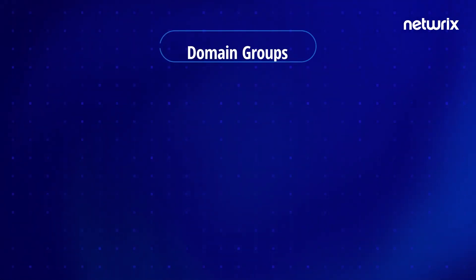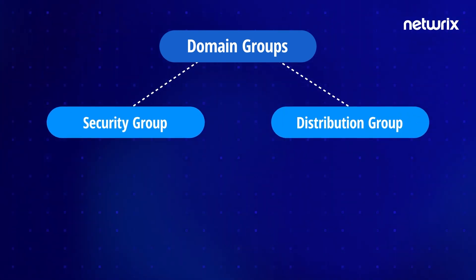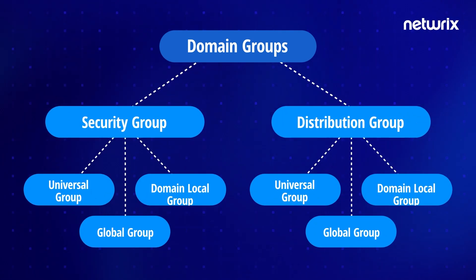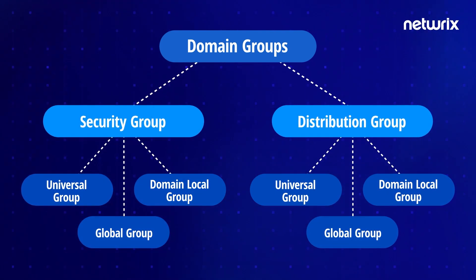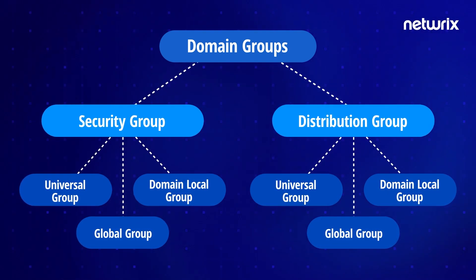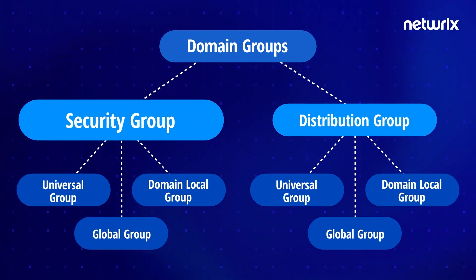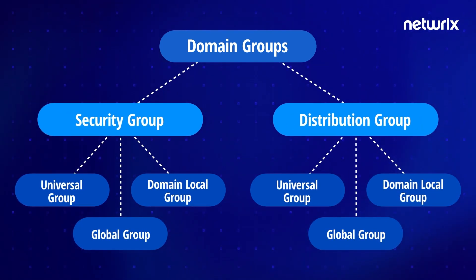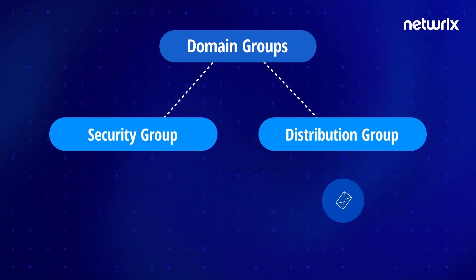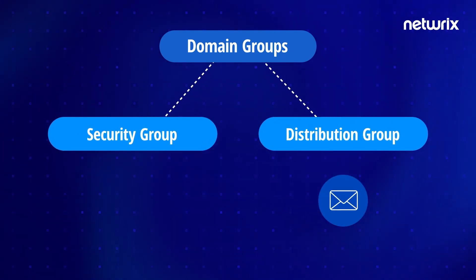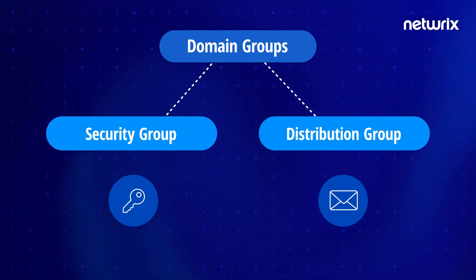Domain groups consist of security groups and distribution groups, and within these two groups there are three group scopes: universal, global, and domain local. When creating a new Active Directory group, you will need to choose between the security and distribution group type, as well as choose the group scope.